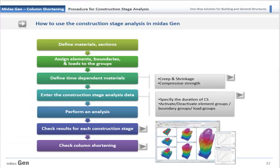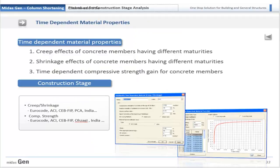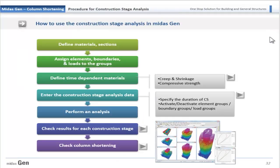This is the flowchart in Midas Gen. Firstly, we create the model and define materials and sections. Then, while assigning boundaries and loads, we define element, boundary, and load groups. We need to define time-dependent materials like creep, shrinkage, and compressive strength — these can be defined manually by users, which is useful when experimental material properties are required. After time-dependent property definition, we define the construction stage analysis data: the duration of stages and activation or deactivation of element, boundary, and load groups in every stage.